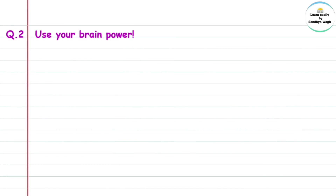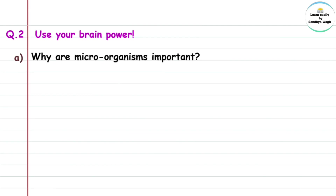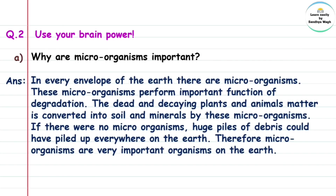Question 2, Use your brain power. A: Why are microorganisms important? Microorganism means sukshma jiv — living things that cannot be seen with the naked eye. Answer: In every envelope of the earth there are microorganisms. Envelope means avaran. These microorganisms are present in each layer of the earth.